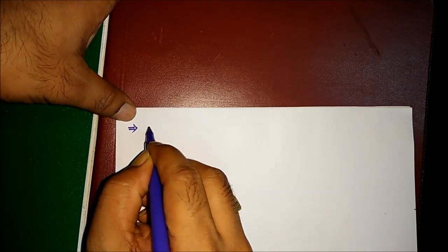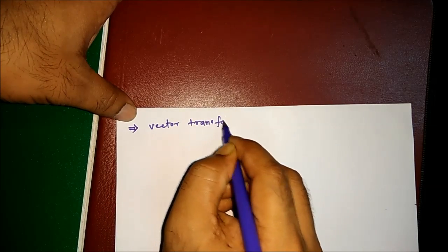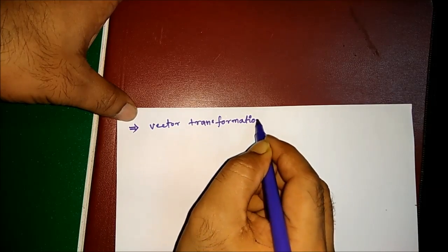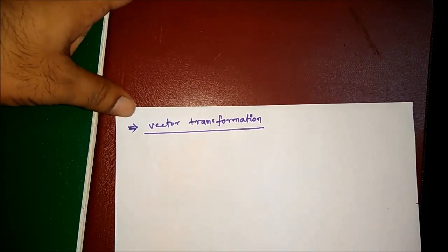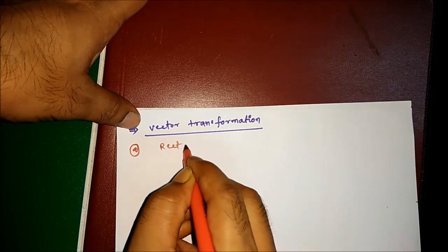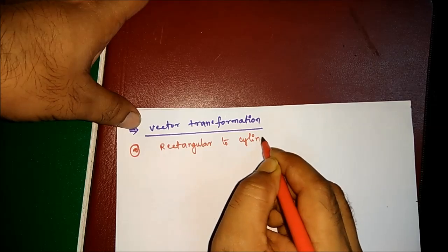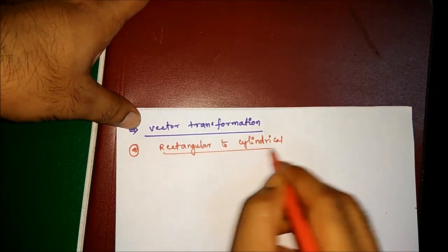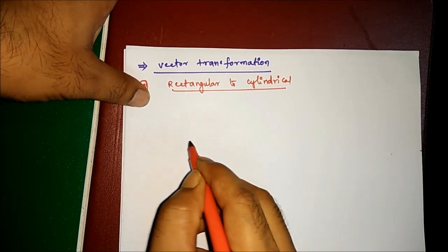In this video we will see vector transformation — that means transforming a vector from one coordinate system to another. We will look at rectangular to cylindrical vector transformation.